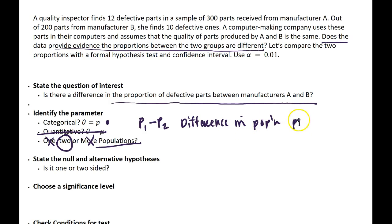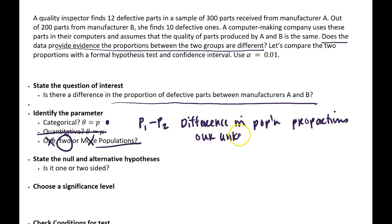So we need to find the difference in the population proportions. These are our unknown parameters, which implies that we should then do a two-proportion Z test.